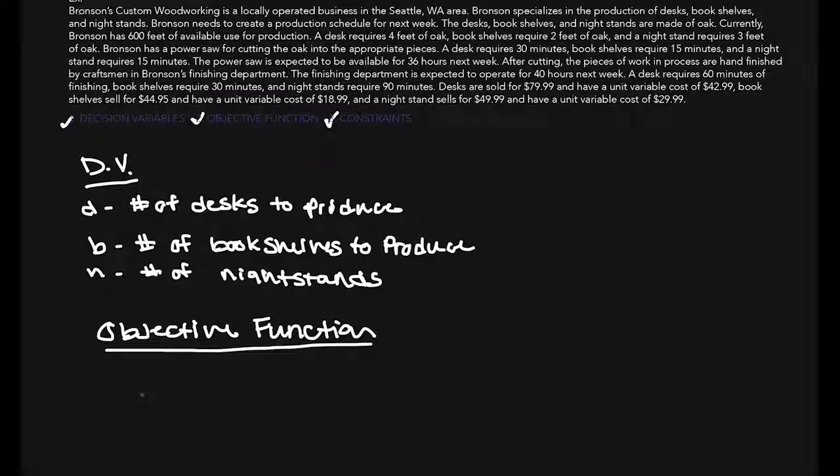And the way that we write that out, we have $37 of profit per unit of D per desk, plus the bookshelves sell for $44.95 and have a cost of $18.99. So, if we do $44.95 minus $18.99, that leaves us with $25.96 profit per bookshelf.